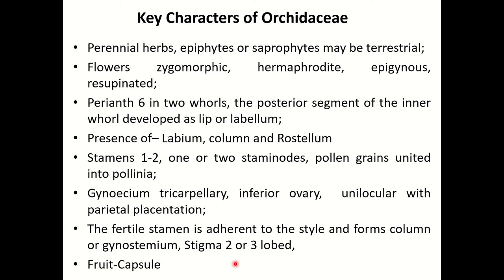The key characters of Orchidaceae are summarized here. They are perennial herbs mainly found in warm and moist places — perennial in nature, epiphytes or saprophytes, sometimes terrestrial. They are also found in dry or seasonally cold environments such as savannas and semi-deserts, as well as rain forests and swamps. Flowers are zygomorphic in nature, hermaphrodite, epigynous and resupinate.